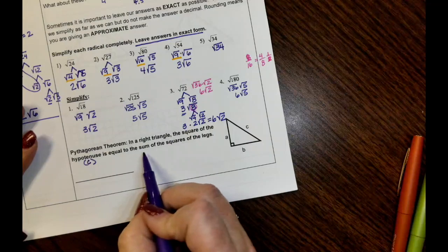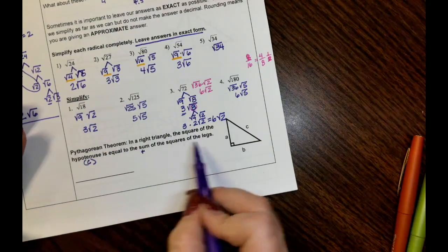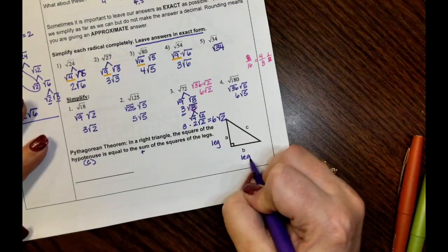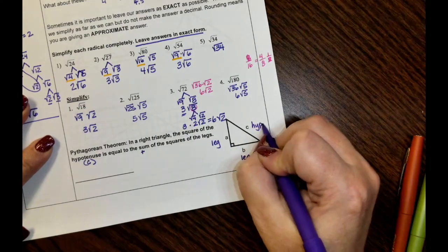is equal to the sum, the addition of the squares of the legs. A is a leg and B is a leg and C is the hypotenuse.